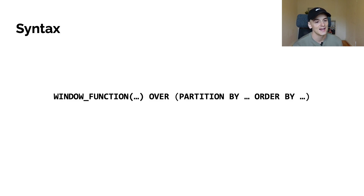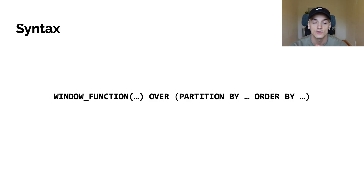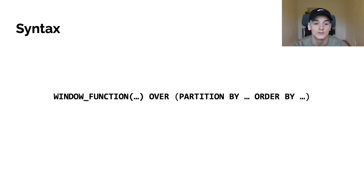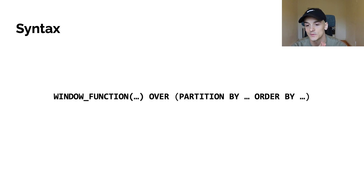In terms of window function syntax, you're going to use your window function — the ones we've just looked at. Sometimes in parentheses you can refer to a specific column in your table. You're going to use the OVER keyword, and then in parentheses again you can specify PARTITION BY a certain column and ORDER BY a specific column. You can omit ORDER BY in some cases. When I write a window function I always write out the full syntax — for example, RANK() OVER (PARTITION BY ... ORDER BY ...) — and then think about whether I actually need all of those constructs.